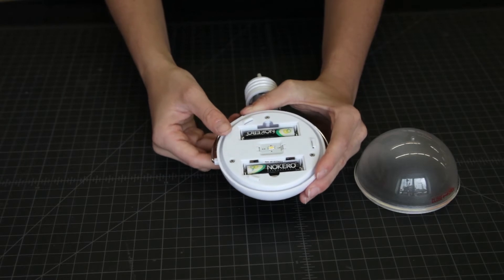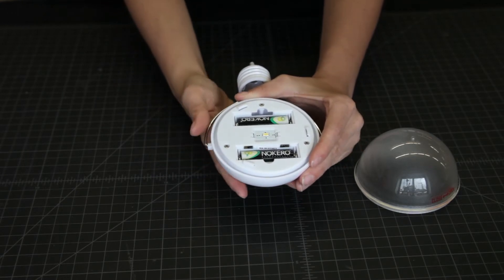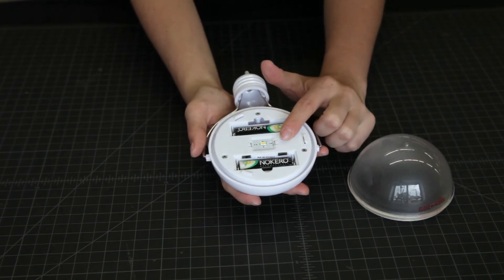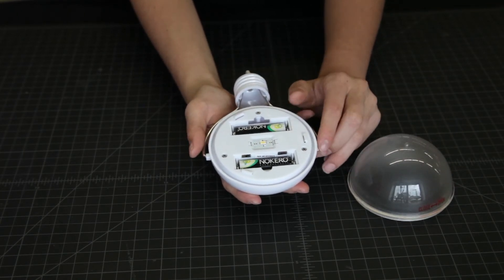Under the removable clear lens, there is an ultra-efficient wide-angle LED that runs for three hours on high or eight hours on low with one day of solar charging.